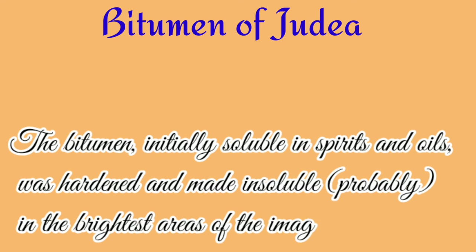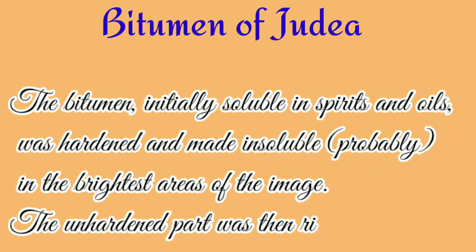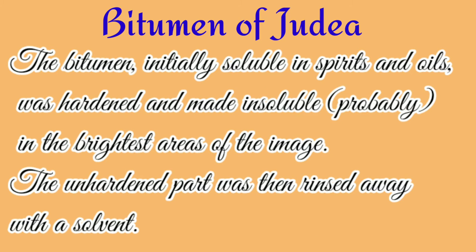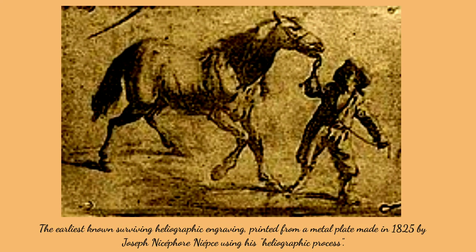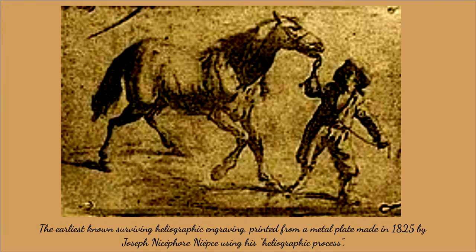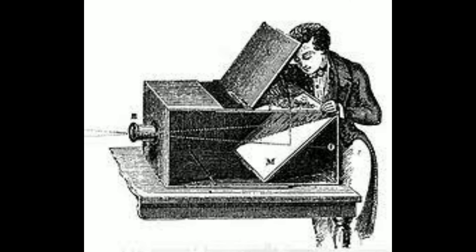Niépce eventually concentrated on bitumen of Judea. He dissolved bitumen in lavender oil, a solvent often used in varnishes, and thinly coated it onto a lithographic stone or a sheet of metal or glass. After the coating dried, he placed an image onto the bitumen-coated surface and exposed it to sunlight. After sufficient exposure, the solvent rinsed away only the unhardened bitumen, printing the image on the coated glass or stone. He called this process heliography, meaning 'sun drawing.' In further experiments, he placed his heliography-coated plate at the other end of a camera obscura and captured images.